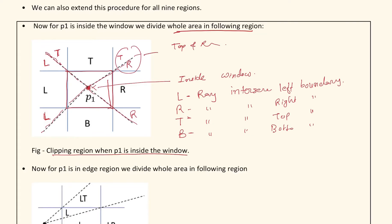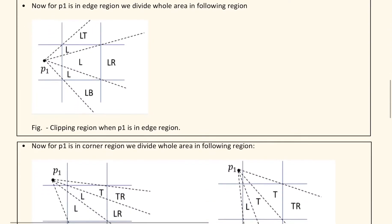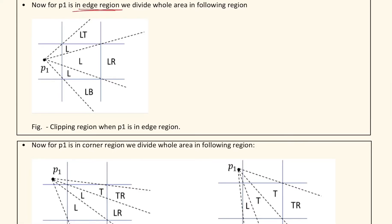Whenever a point is inside the window, we take four parts: left, right, LT, and TR. Now the second condition is when P1 is in an edge region. The whole area is divided into the following regions: LT, L, LR, and LB.